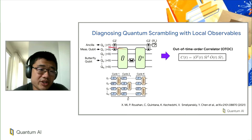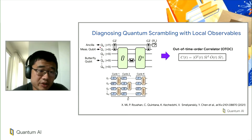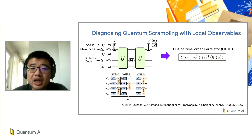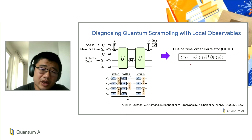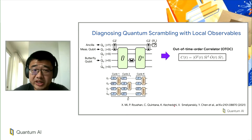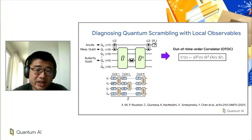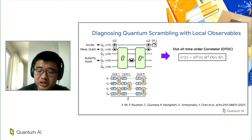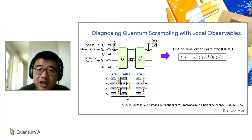The OTOC is essentially the commutator between the butterfly qubit and the measurement qubit. This experiment is described in our paper, which we encourage everyone to check out — it describes a lot of error mitigation strategies that are essential for this particular experiment, though I won't go into those details in the slides that follow.